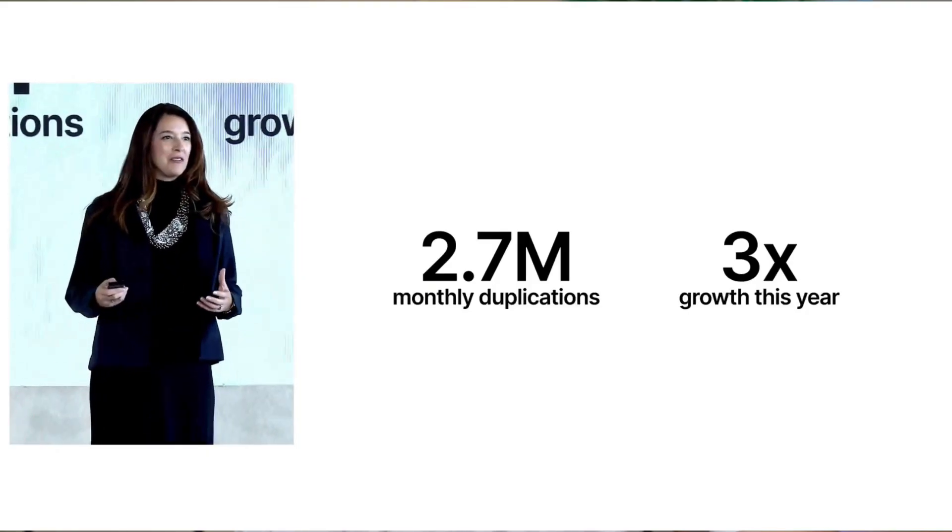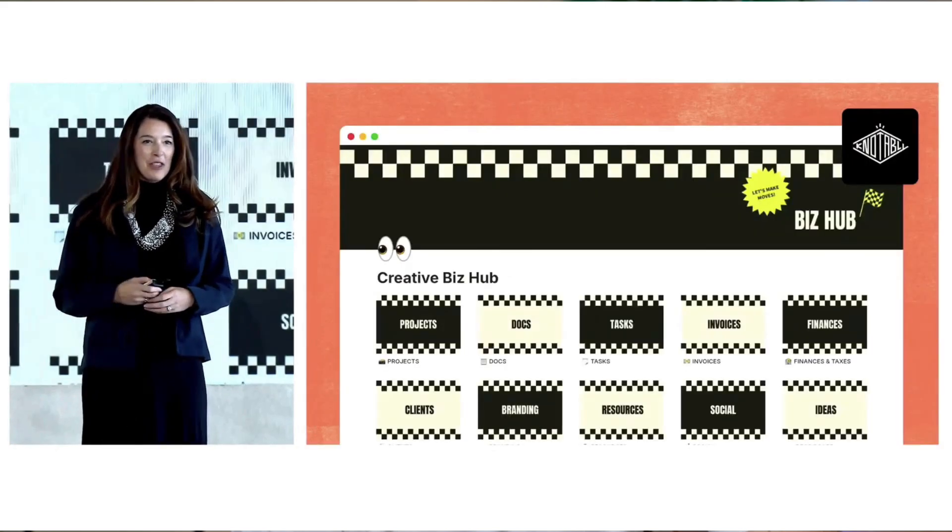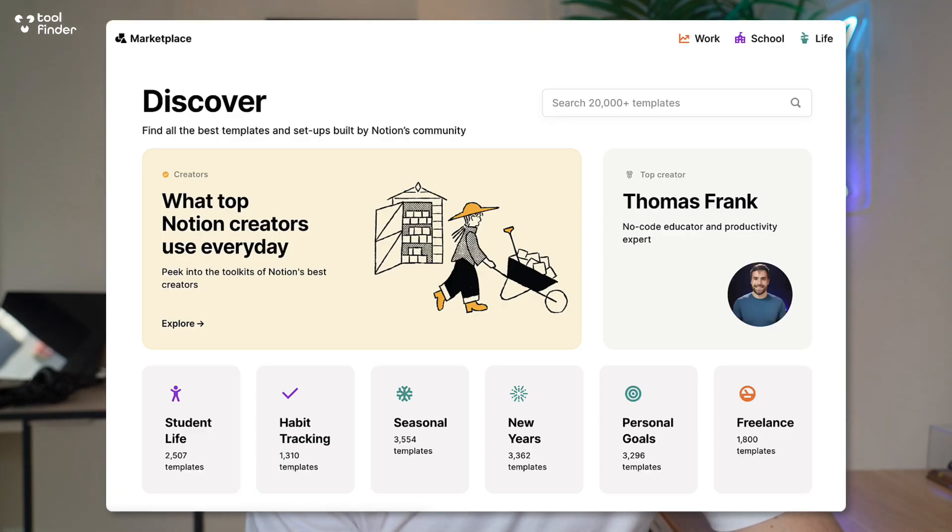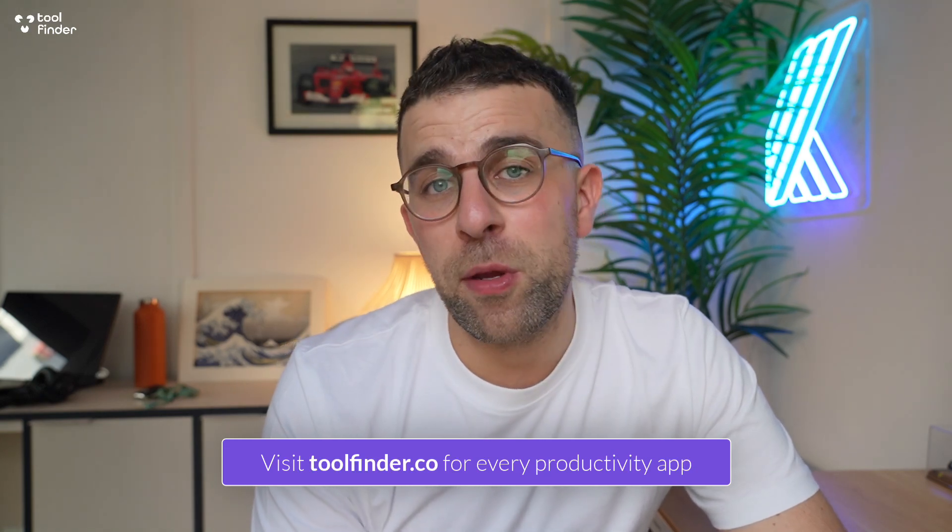The final big update was the Marketplace, which introduced a better way for creators to make and sell templates. This essentially railroads the concept of Gumroad, because it lets you manage the whole template experience — distributing it, marketing it internally through their marketplace, and taking payments. Notion will take 10% of the payment, but compared to Gumroad that's fairly reasonable, and you still make 90%. It's a much more secure and functional way to distribute templates.